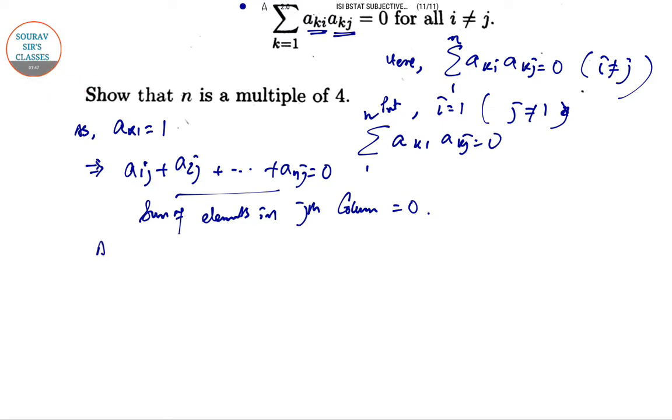Now as a_kj equal to 1 or minus 1, assuming that m out of n entries in jth column are minus 1, hence the rest n minus m entries will be 1 and their sum is 0.